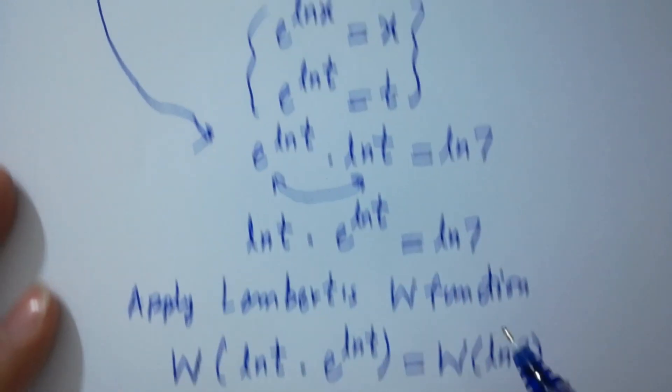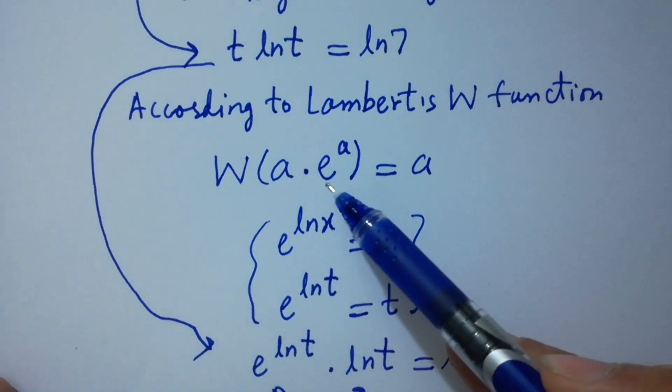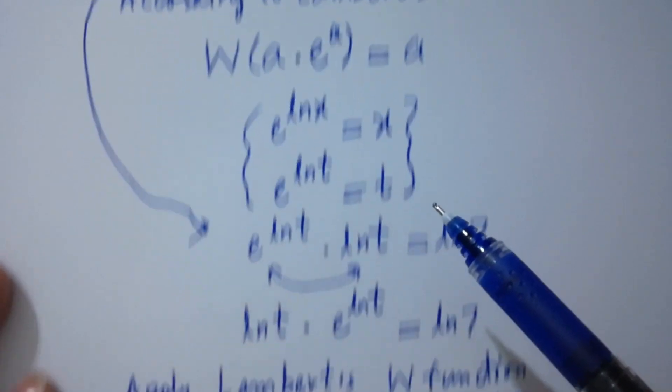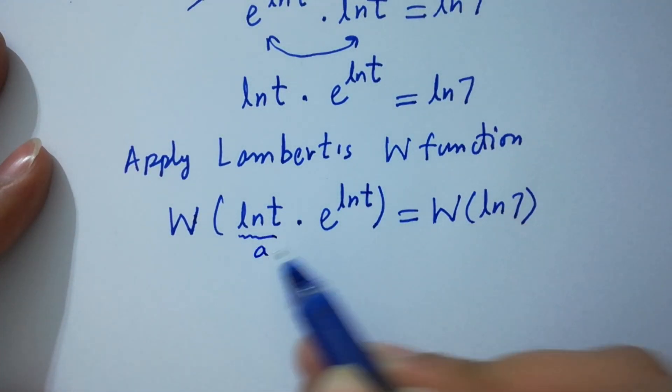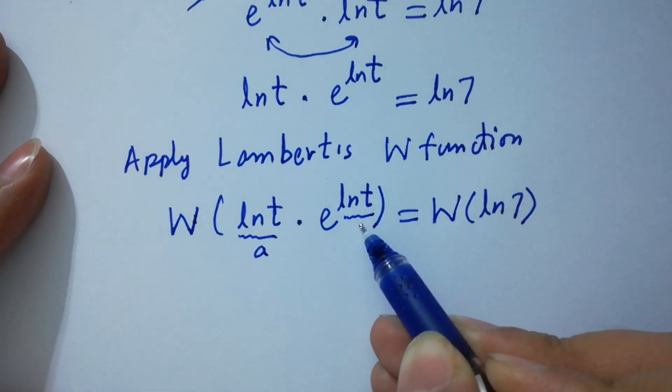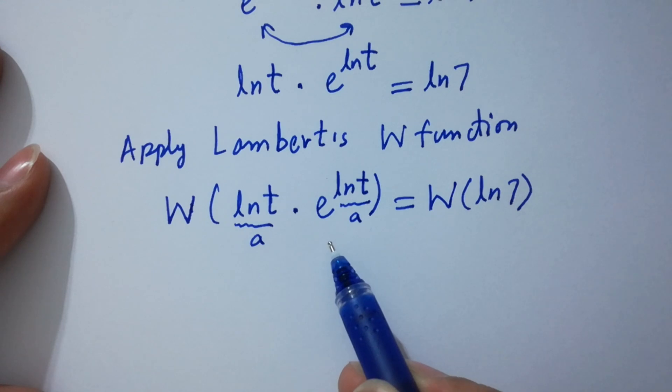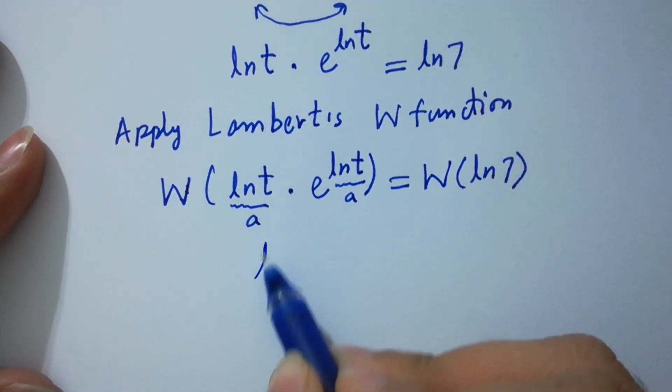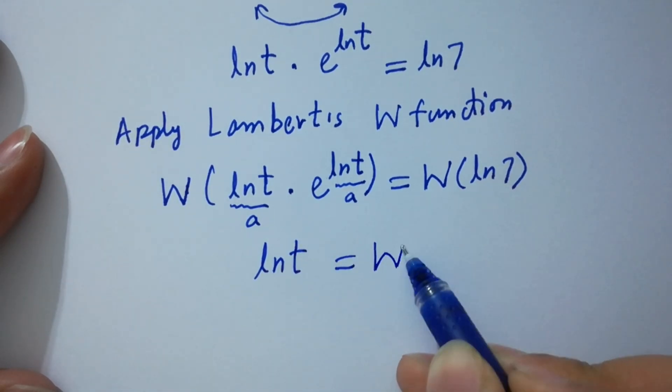As we know, Lambert's W function W(a times e to the power a) equals a. So W(ln t times e to the power ln t) equals ln t equals W(ln 7).